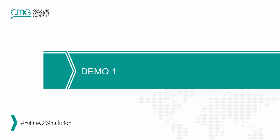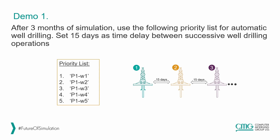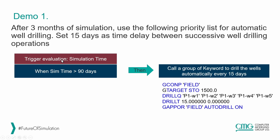Now let's move to the first demo. In this case I'll show you how to start automatic well drilling three months after the simulation starts. The simulator is going to use a priority list to drill the wells, and additionally we will configure the keywords so that the wells are drilled every 15 days. Here is the priority list mentioned previously, and here are the 15 dates used as a time delay between well and well.